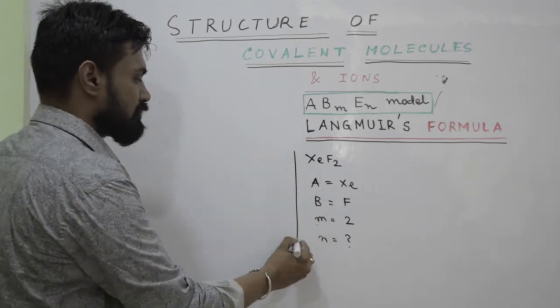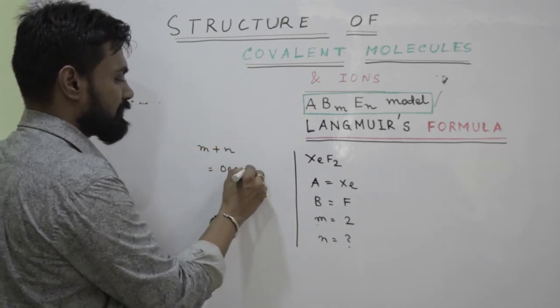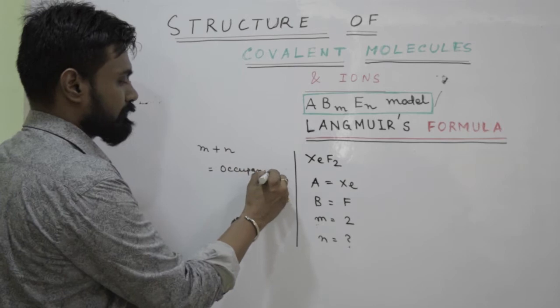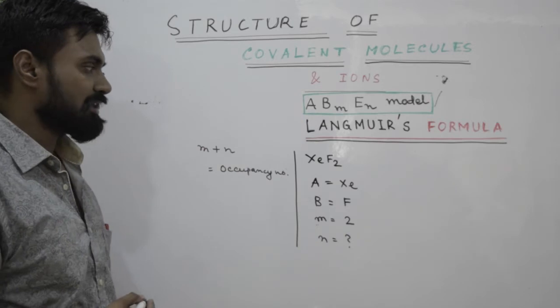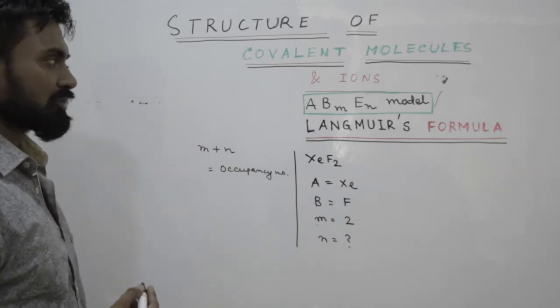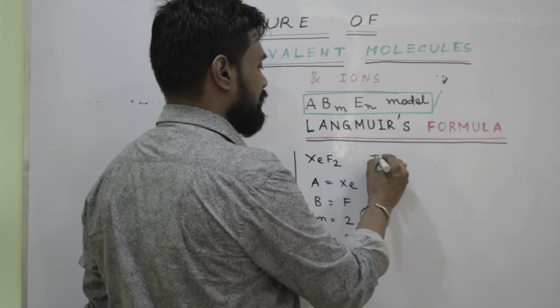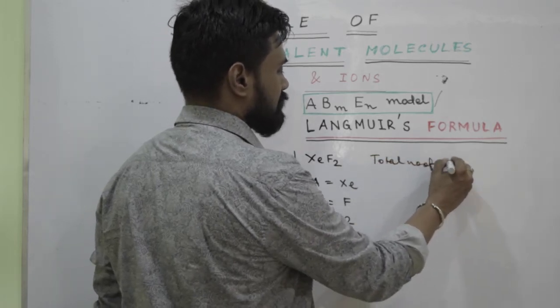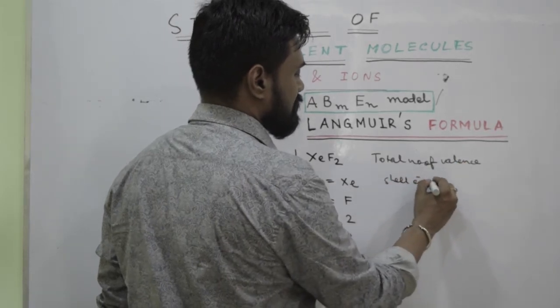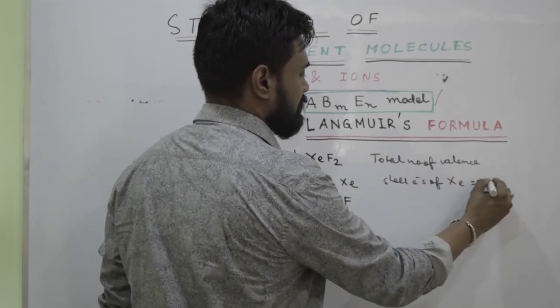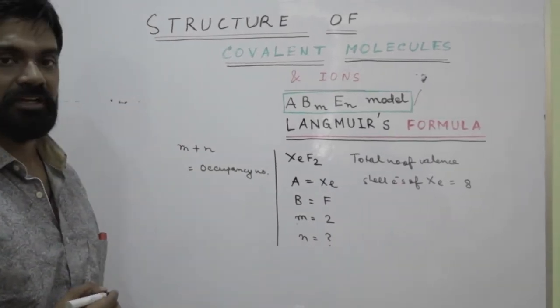Now I can also give you another hint: m plus n is called the occupancy number. From literature we have some data where we can find this occupancy number and predict the structure of the covalent molecule. So first of all, if we find the total number of valence shell electrons of xenon, that is 8. All of you know that xenon is in group 18, so it has 8 electrons in its valence shell.